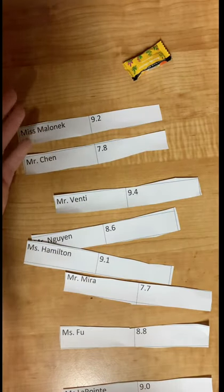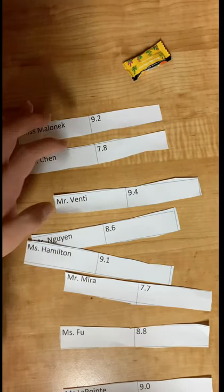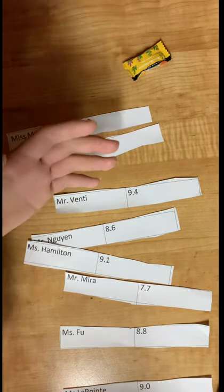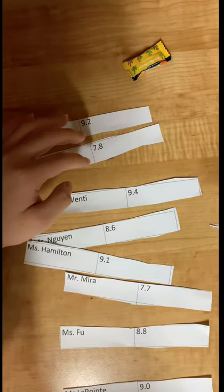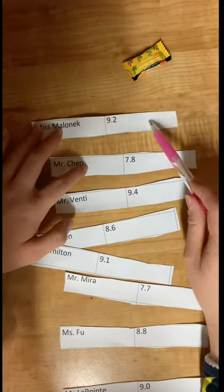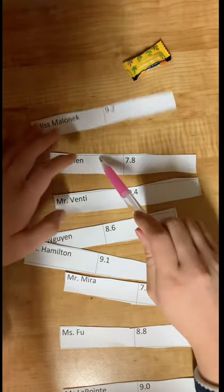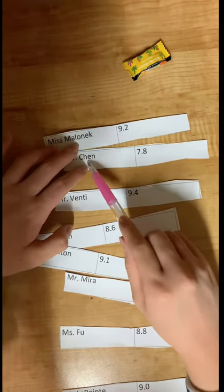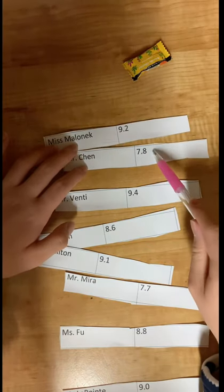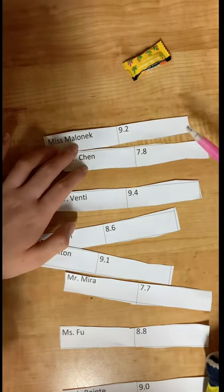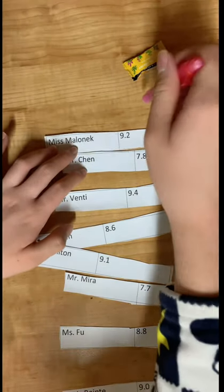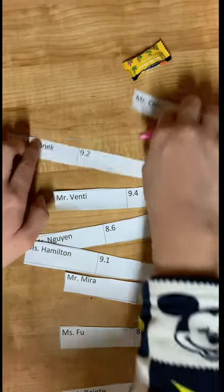To get started with Bubble Sort, Bubble Sort works by comparing two data values and then moving it up or down, depending on whether it's above or below that data value. We'll be comparing the first and second data value. Our first data value is Malonic, which is 9.2, and our second data value is Chen, which is 7.8. Since 7.8 is less than 9.2, and since we're sorting this data from least to greatest, it should be above 9.2. So we need to swap the data points.